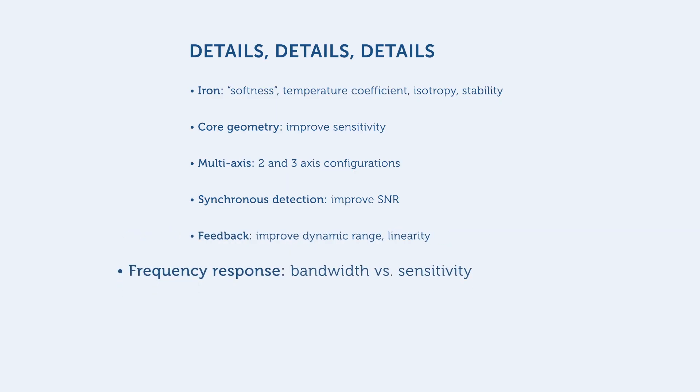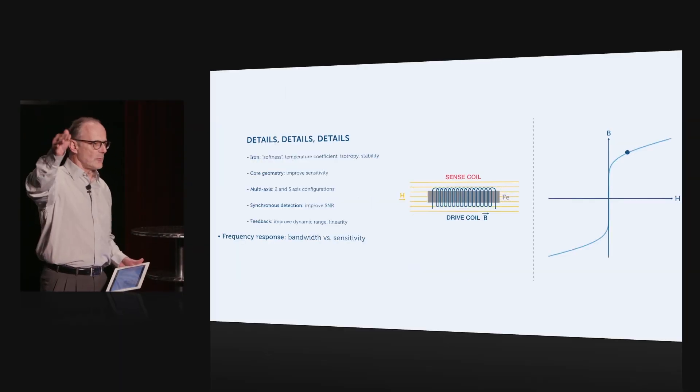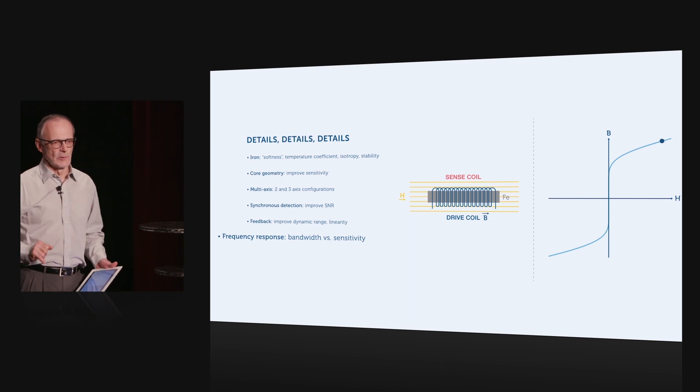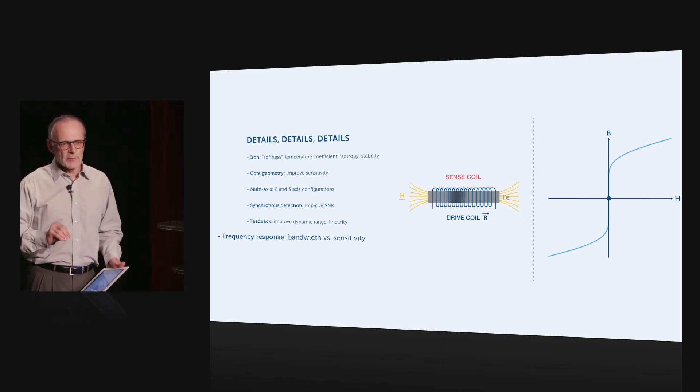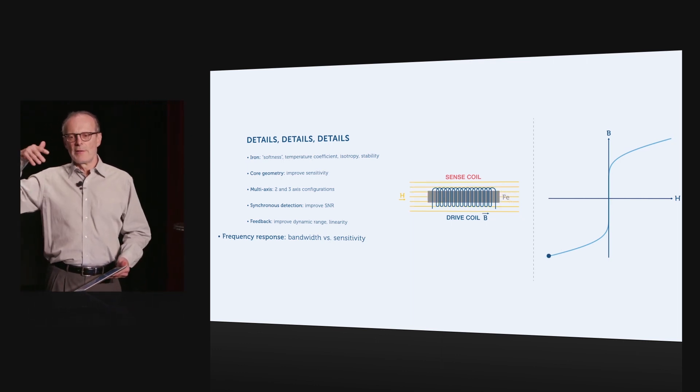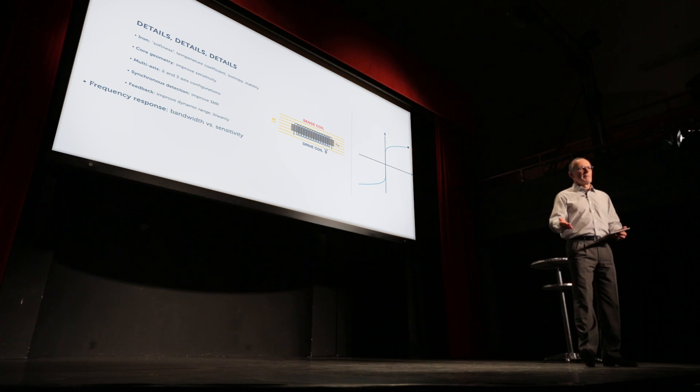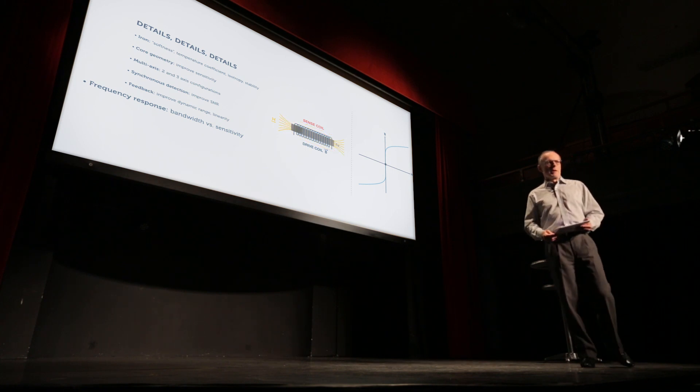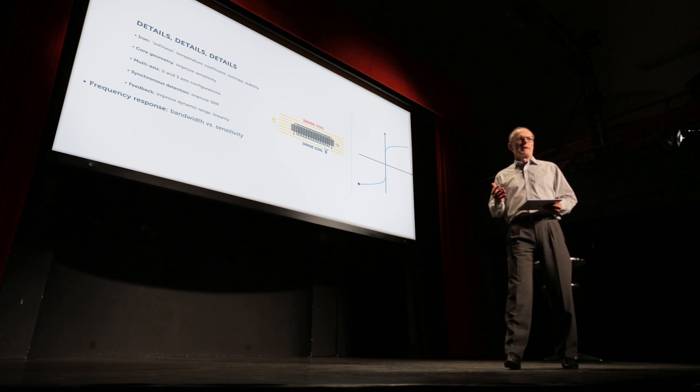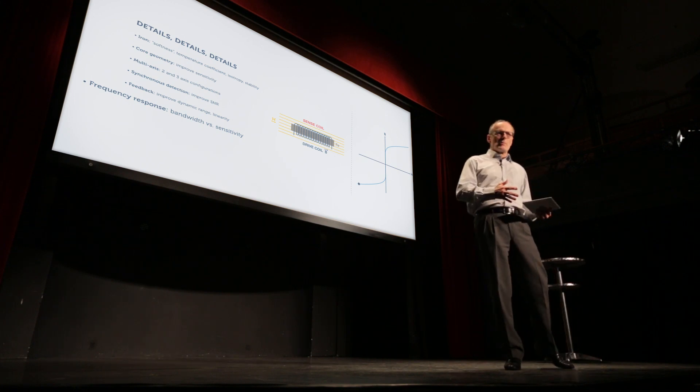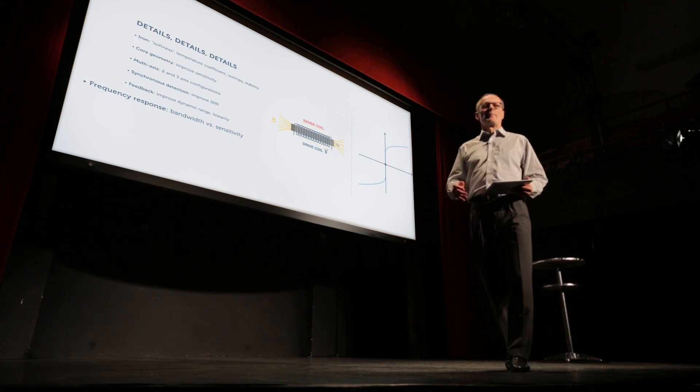We also need to optimize the operating frequency of the flux gate, the rate at which we traverse this hysteresis loop. If we choose a very high frequency, we're favoring the measurement bandwidth of the magnetometer. And if we choose a lower frequency, we are favoring the resolution. So there's a tradeoff to be made between bandwidth and resolution as often.